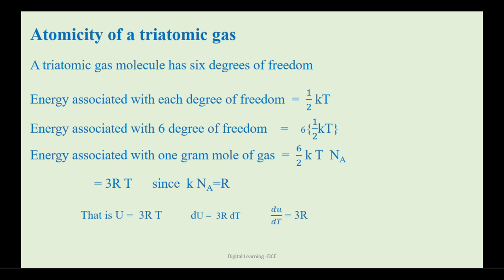The energy associated with one gram mole of a gas is equal to 6 by 2 into kT Na. Here, k represents Boltzmann constant, T is absolute temperature of the gas, and Na is Avogadro's number. By substituting in place of k into Na by R, the product of Boltzmann constant and Avogadro's number gives universal gas constant R. We get energy associated with one gram mole of a gas is equal to 3RT.